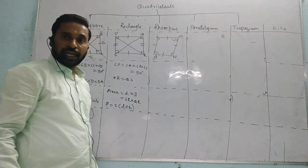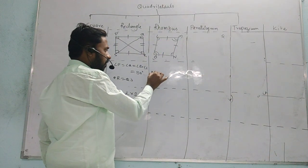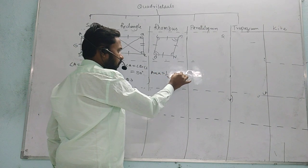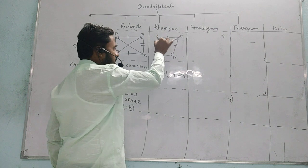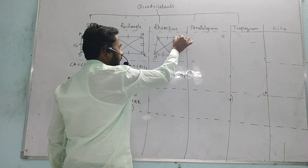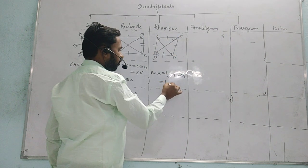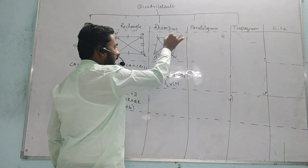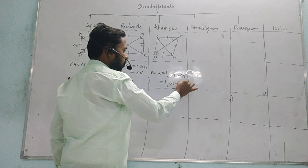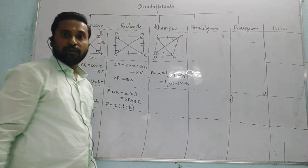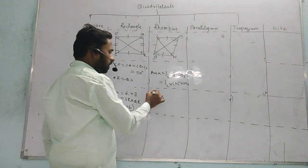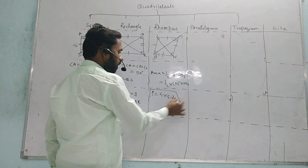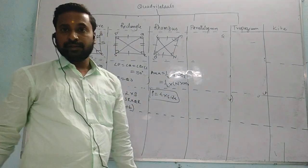Area of a rhombus is half into diagonal 1 into diagonal 2, where the diagonals are the two diagonals of the rhombus. And the perimeter is 4 multiplied by side, because all four sides are of equal measurement.